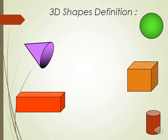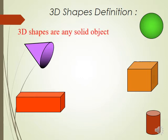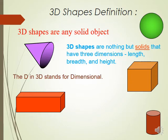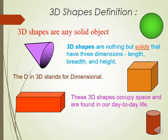We're going to start with the 3D shapes definition. 3D shapes are any solid object — solids that have three dimensions: length, breadth, and height. The 'D' in 3D stands for dimensional. These 3D shapes occupy space and are found in our daily life.